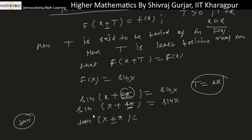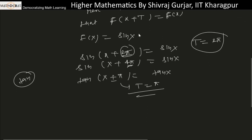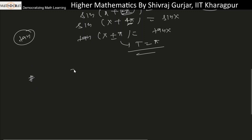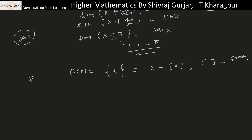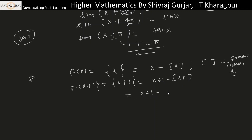The next example is the fractional function of x. The fractional function of x is nothing but x minus the greatest integer of x. Now what will its period be? If we compute f(x + 1), that is x + 1 minus the greatest integer of (x + 1), which we can write as x minus greatest integer of x, which is the fractional function f(x). So the period of the fractional function is 1.